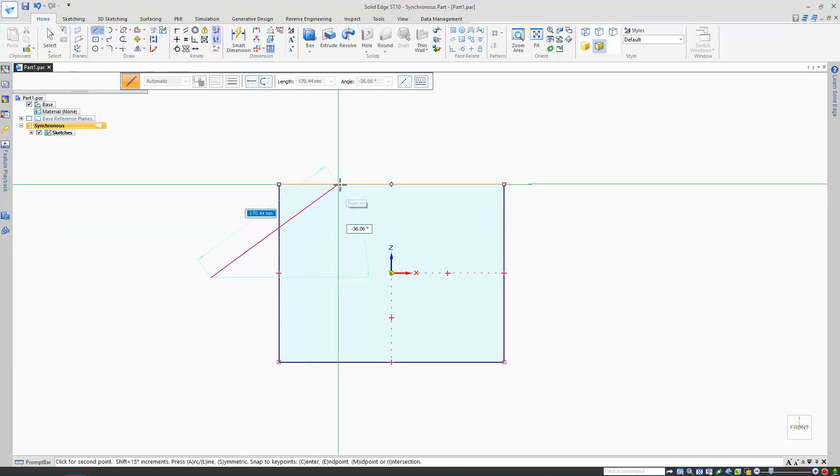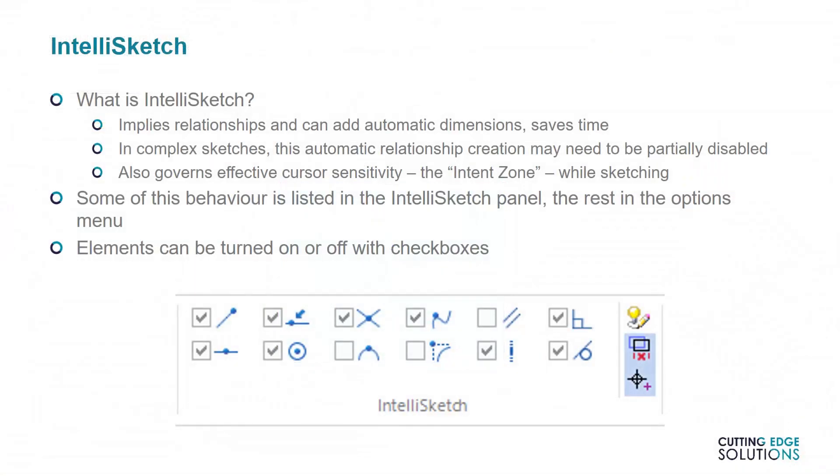If you see a sketch line snapping to a particular orientation while you're creating it, that's IntelliSketch at work. You can override it temporarily by holding down ALT if it's interfering with your sketching. And if you go into Advanced IntelliSketch options, this is where you can enable continuous auto-dimensioning. I keep that option off personally, but I understand some users like automatically placed dimensions.